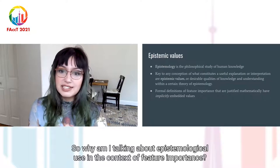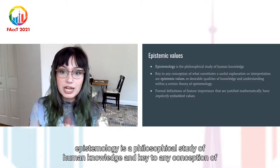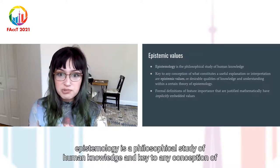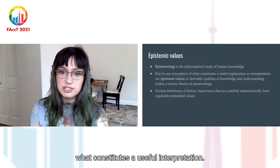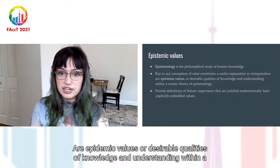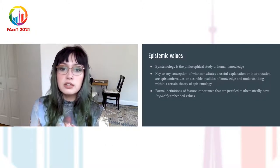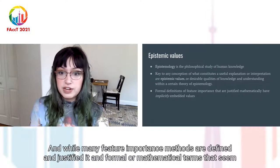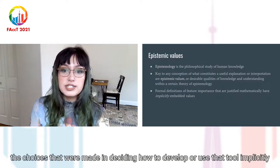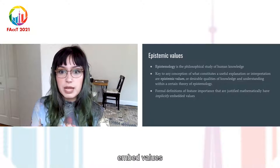So why am I talking about epistemic values in the context of feature importance? Well, epistemology is a philosophical study of human knowledge, and key to any conception of what constitutes a useful interpretation are epistemic values — desirable qualities of knowledge and understanding within a certain theory of epistemology. While many feature importance methods are defined and justified in formal or mathematical terms that seem objective, the choices made in deciding how to develop or use that tool implicitly embed values.